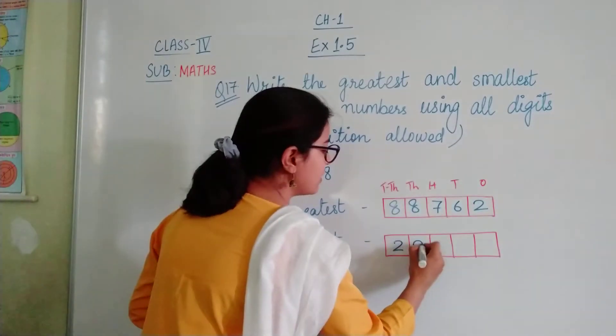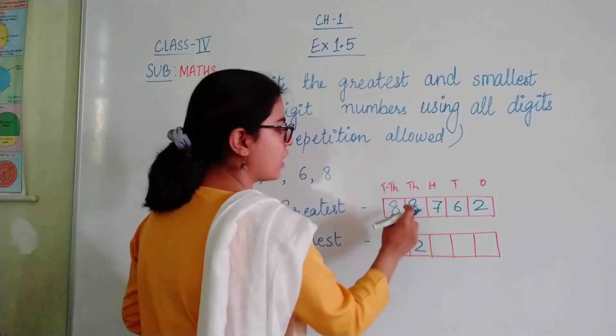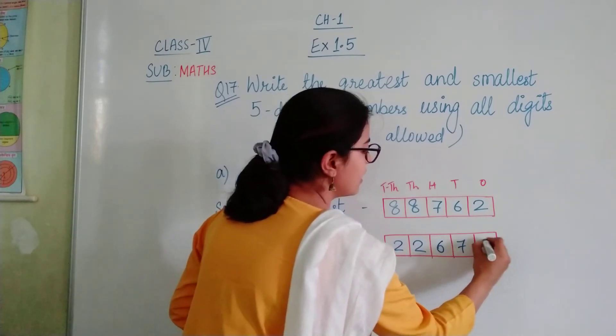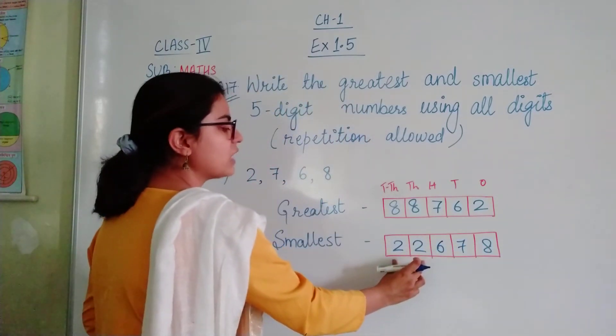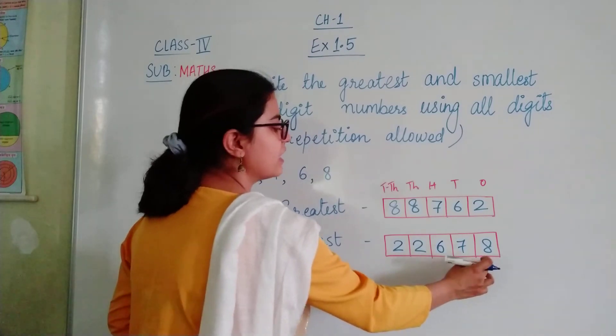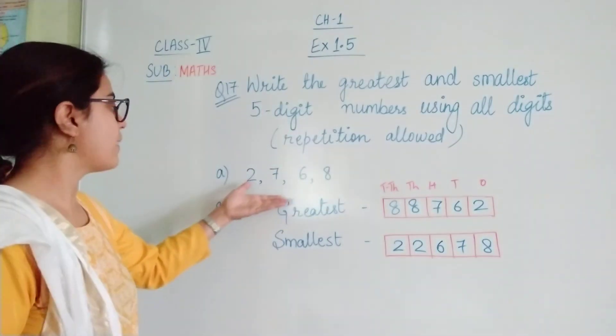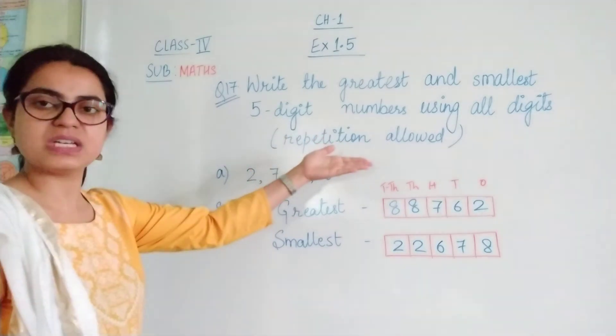Hame smallest number ko highest place value pe repeat karna hai. So here, 2 is repeated at 10,000 and thousands place. Then we have 6, 7, 8. That is 22,678 is the smallest 5-digit number formed by the 4 digits with repetition.